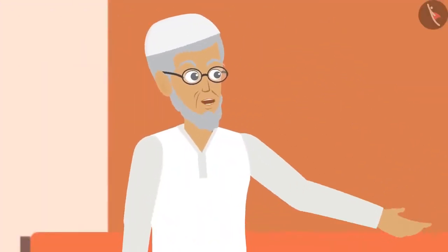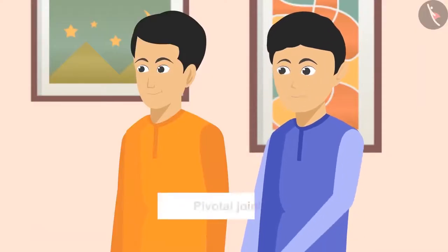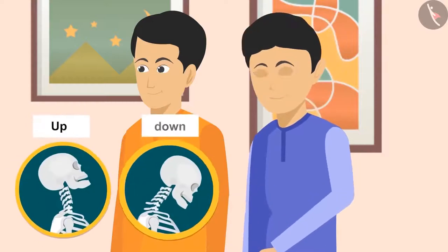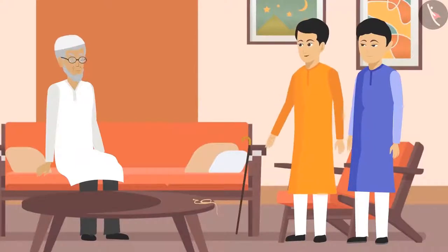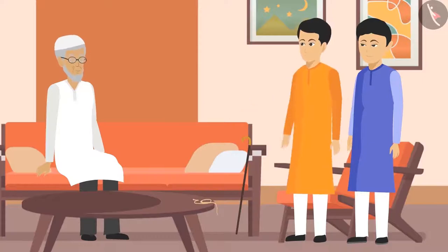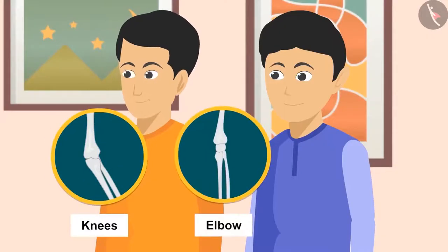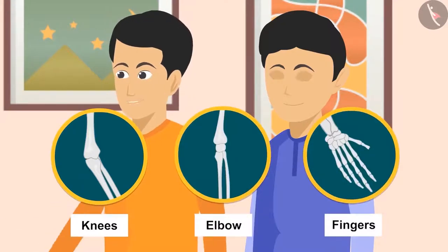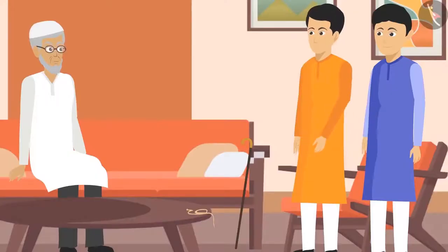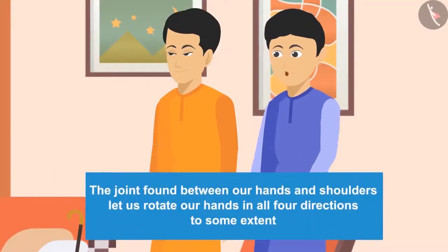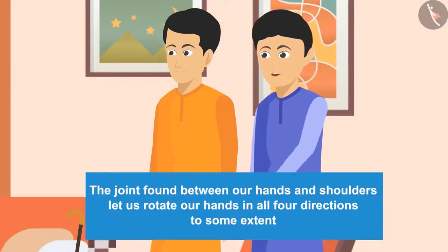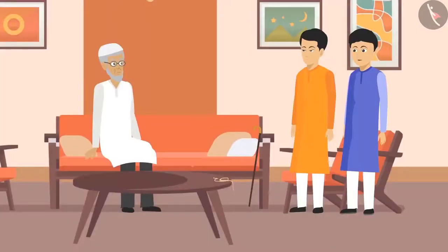'Now tell me which joint is helpful in which kind of movement.' 'Chacha ji, we can rotate our neck left and right or up and down with the help of the pivotal joint. Hinge joints work exactly like the opening and closing of doors — these joints are found in our knees, elbows, and fingers. Body parts can move only in one direction with this joint. At the ball and socket joint, we can move up and down or left and right.'